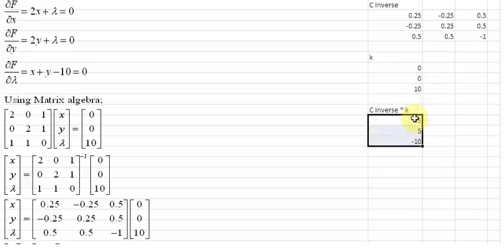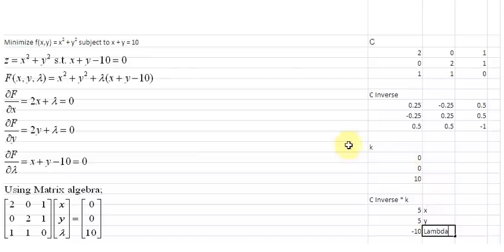And there we have it. This 5 is the value for x, the next 5 is the value for y, and minus 10 is the value for lambda. So we have successfully minimized the objective function subject to this constraint of x plus y is equal to 10. This is all I wanted to show you in this video. See you later.